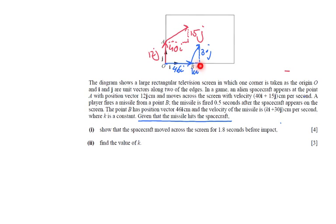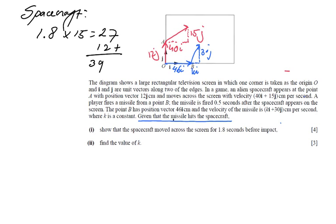I don't know what the horizontal displacement is going to be for the rocket, but I do know the vertical displacement for both. So for the spacecraft, in 1.8 seconds, how much is he going up? 15 J's, which is 1.8 times 15, and that is 27. So he's going 27 centimeters up, but he was already 12 centimeters up. So after 1.8 seconds, he's going to be 39 centimeters up.